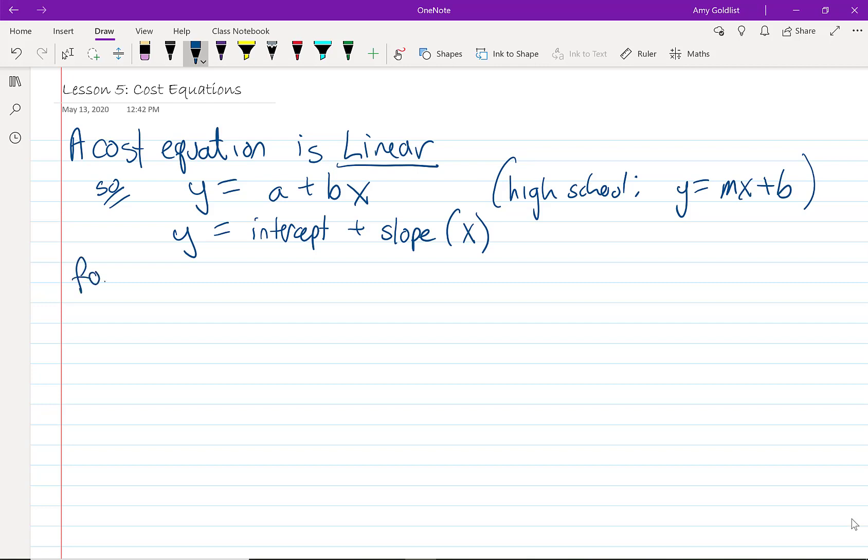Okay, for costs we have an equation that looks like cost equals fixed cost plus variable cost per item times the number of items, or C equals FC plus VC times x.